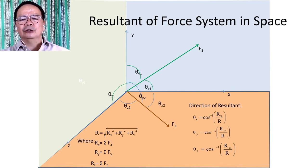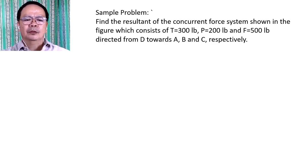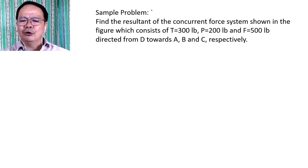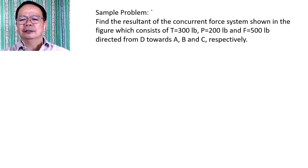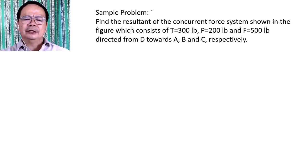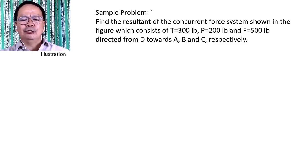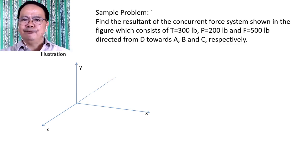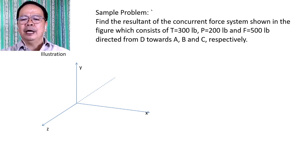To better understand this resultant, let us have a sample problem. Find the resultant of the concurrent force system shown in the figure, which consists of T = 300 pounds, P = 200 pounds, and F = 500 pounds, directed from D towards A, B, and C respectively. In the x-y-z space, let us indicate the positions of points A, B, C, D as well as the directions of forces T, F, and P.